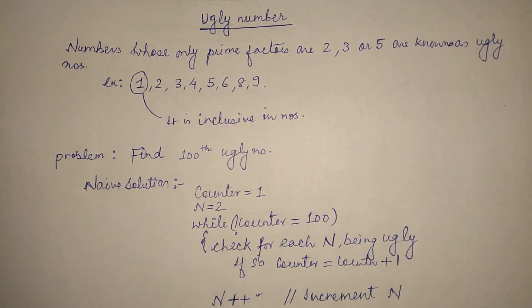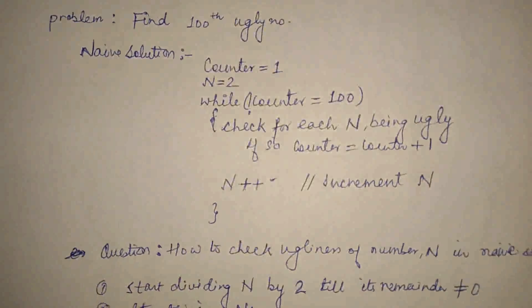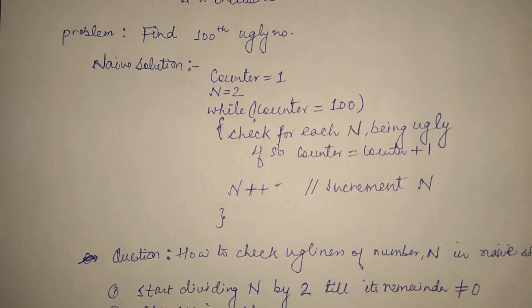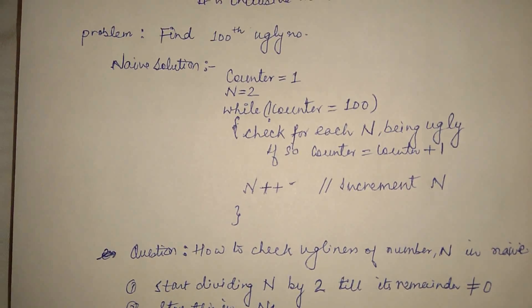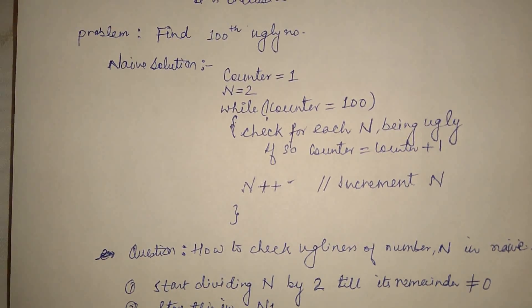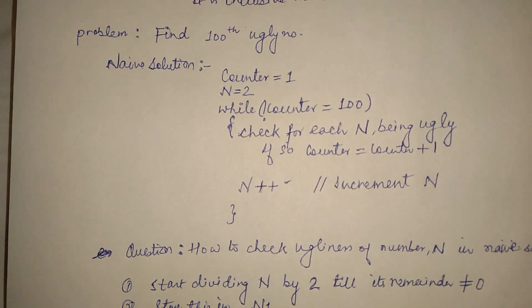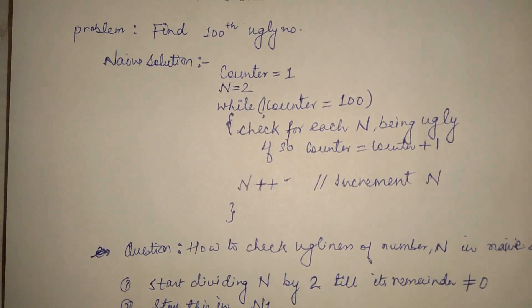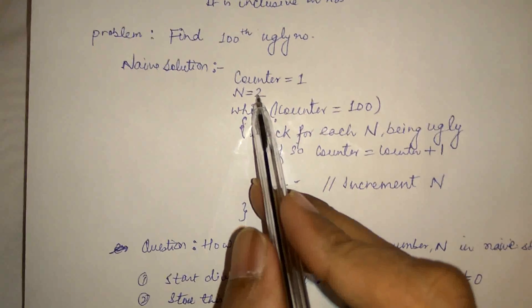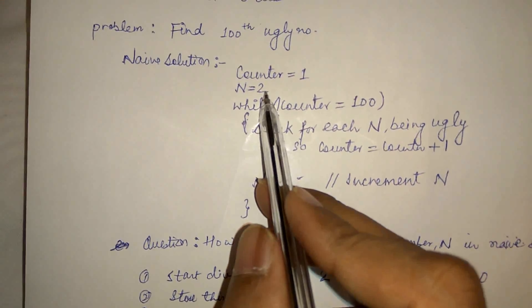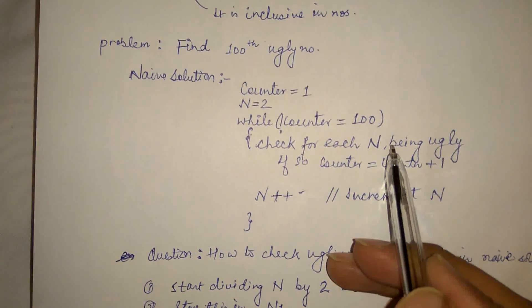The problem is to find the 100th ugly number. What is the naive solution? We set one counter and assign value 1. We have some number n, and we will start incrementing this counter only if we find that n is ugly or not. We start iterating n from 2, because 1 is already the first ugly number — that is the base case.